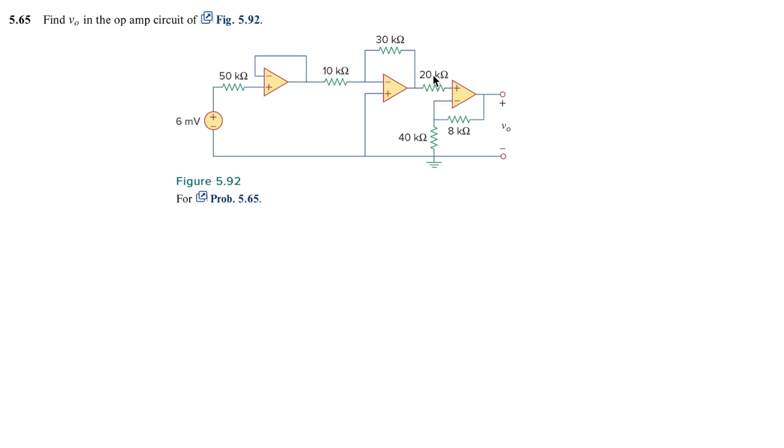In problem 5.60 we had two cascaded op amps and to solve this you use the same approach basically. So you start from here from the left and you find the output here then you find the output here and then finally you have the output here.